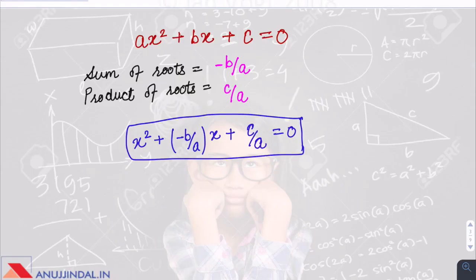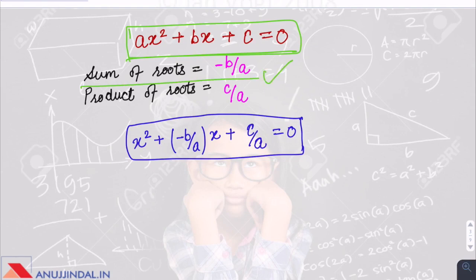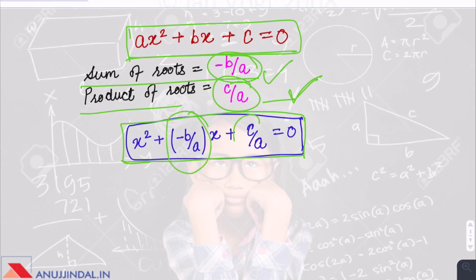Sometimes the sum of roots or product of roots is given and you have to form a quadratic equation. The sum of roots is minus b by a and the product of roots is c by a. When both are given, you form the equation by substituting the sum of roots and the product of roots into the standard form — and this is how you form a quadratic equation.